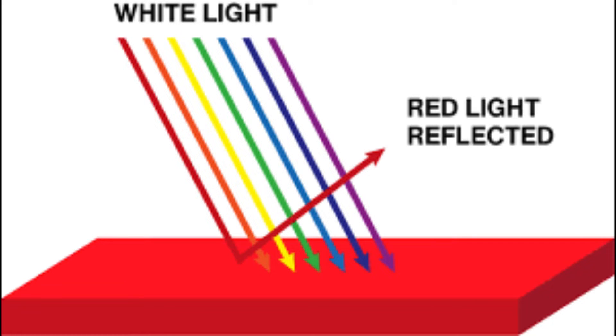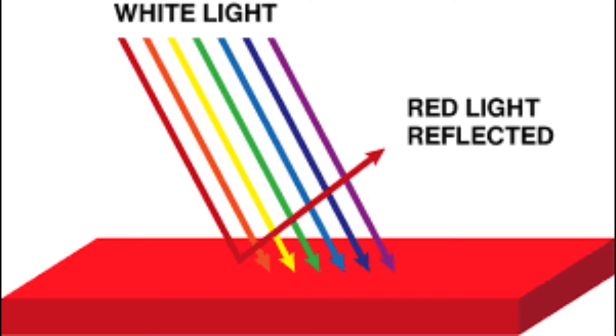Each colour is a different wavelength, with red being the longest and violet being the shortest. When we see something the colour of red, the object is absorbing all the wavelengths except for red — the red wavelength is reflected back to us. This applies to all the colours except black and white.